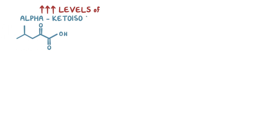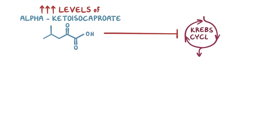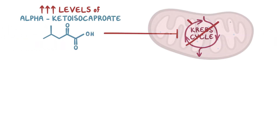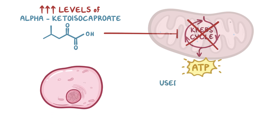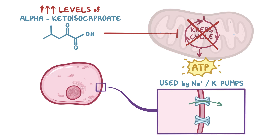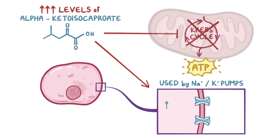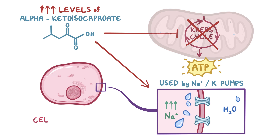High levels of alpha-ketoisocaproate inhibit the Krebs cycle, which takes place in the mitochondria. This process is necessary for the production of ATP, which is used by sodium-potassium pumps to pump sodium out of the cell and potassium in. This causes a buildup of sodium ions in the cell, which allows water to flow into the cells by osmosis, leading to cellular swelling and cerebral edema.